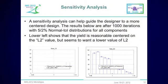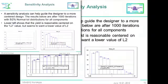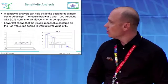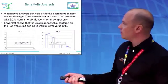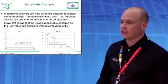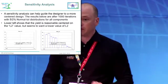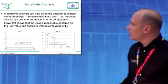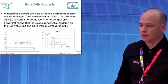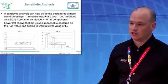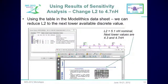However, L2 is very poorly centered. Component values on the left side of the distribution show a much better yield. Note that the bars in the middle are at zero — that's due to the clipping in the distribution, not because yield is actually zero there. Components simply don't cover that middle region.